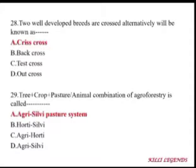When two well-developed breeds are crossed alternately, the breeding system is known as crisscross breeding.